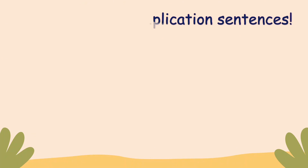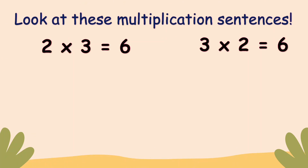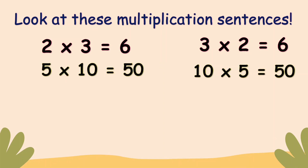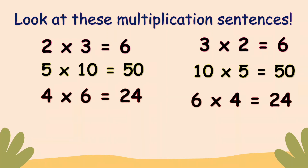How about these multiplication sentences? Two times three equals six; three times two equals six. Five times ten equals 50; ten times five equals 50. Four times six equals 24; six times four equals 24. The factors were interchanged — you change the position of the factors — but the product is still the same.